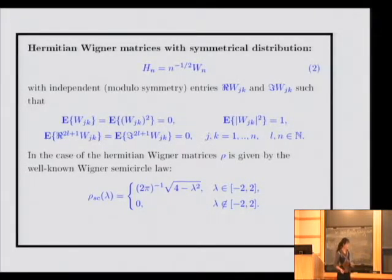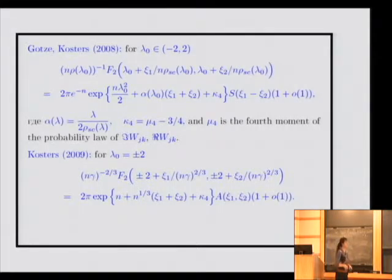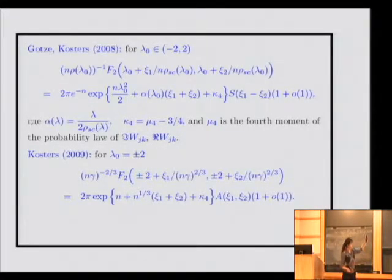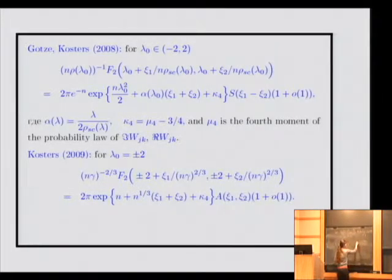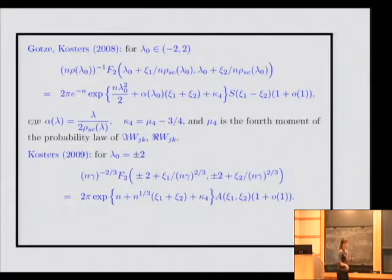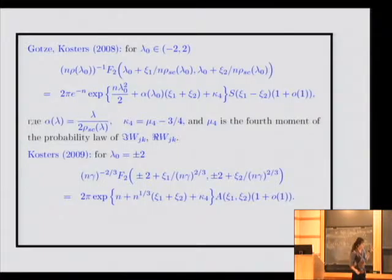The density of states in this case is well known — it's given by the famous Wigner semicircle law. Now, the problem was considered before my work. Gertz and Kostras considered the case of two determinants — k=1 in my formulas — and obtained such asymptotics. This is the asymptotic for the bulk of the spectrum, and this is the asymptotic for the edge of the spectrum. Note that gamma here equals 1.